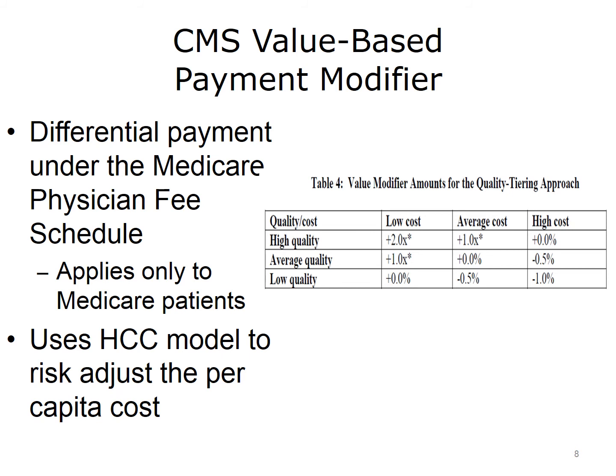Then, quality measures are calculated, and the combination of cost and quality is used to assign which value modifier applies to the fee schedule for that physician or group of physicians. The excerpted Table 4 from the CMS description of the program shows that a low-cost, high-quality group could receive a 2% increase for each service performed, while a high-cost, low-quality group could have payment reduced by 1%.